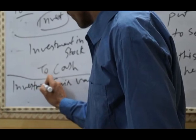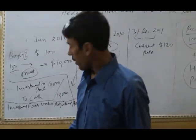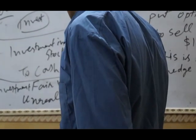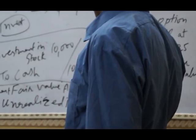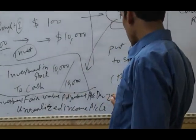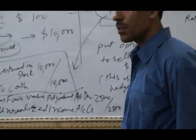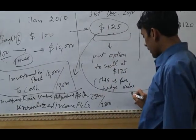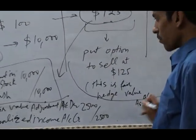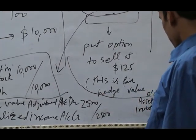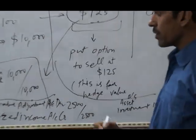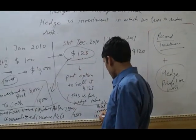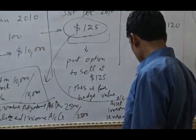This is the investment fair value adjustment — it is just like income. We credit the unrealized income account for $2,500. On the balance sheet, we show this on the asset side: the investment of $10,000, and we also show the unrealized earning of $2,500, which is not realized but unrealized income.